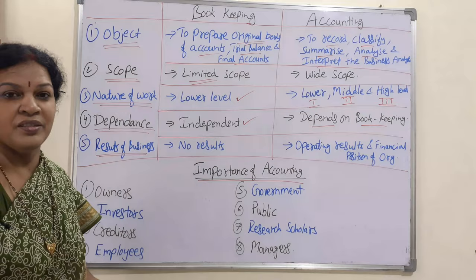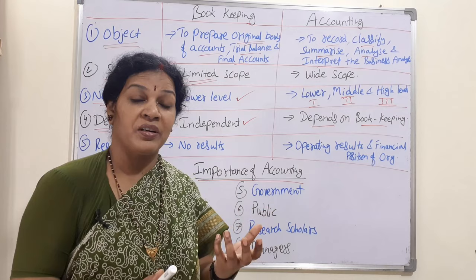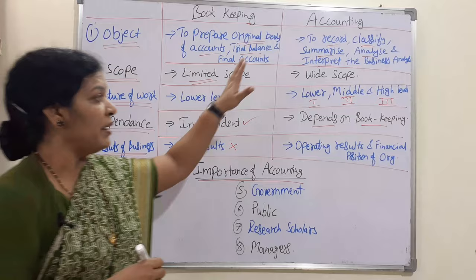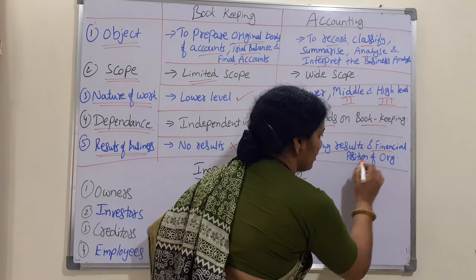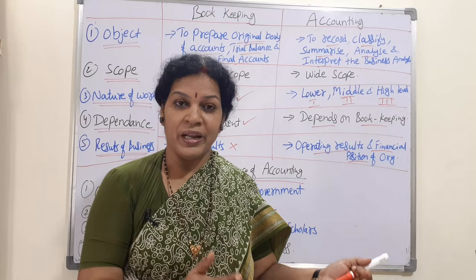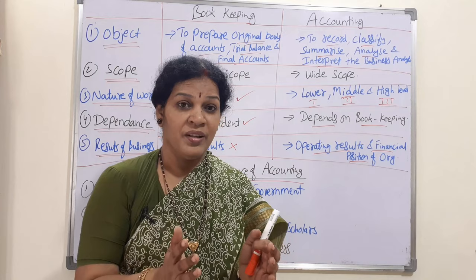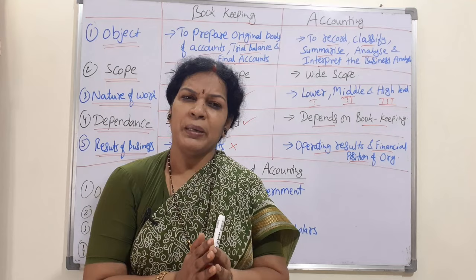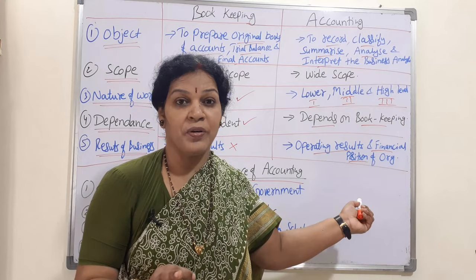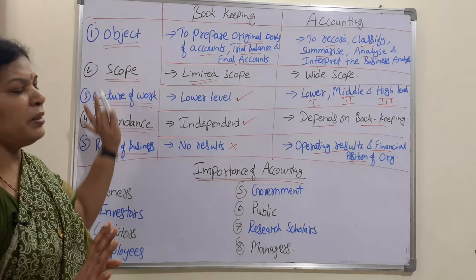The fifth difference is results. Business-related results like profits or losses and the financial position of the organization are not revealed by bookkeeping — no results can be analyzed from bookkeeping. But in accounting, we can analyze the operating results and financial position: net profit or net loss, comparisons with last year, one branch to another, using ratio analysis and financial statements. That is possible only in accounting.